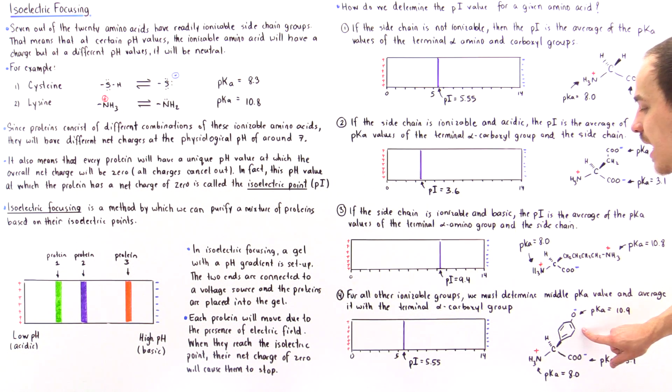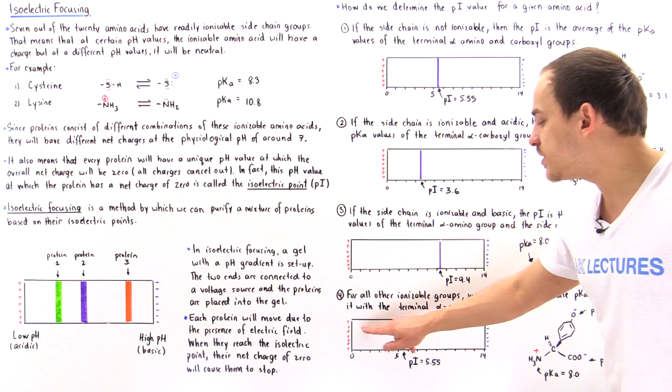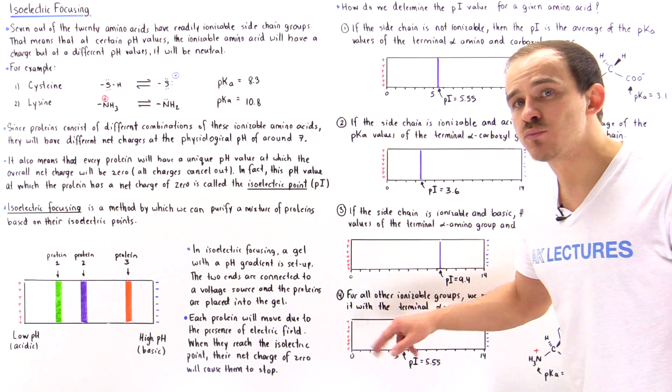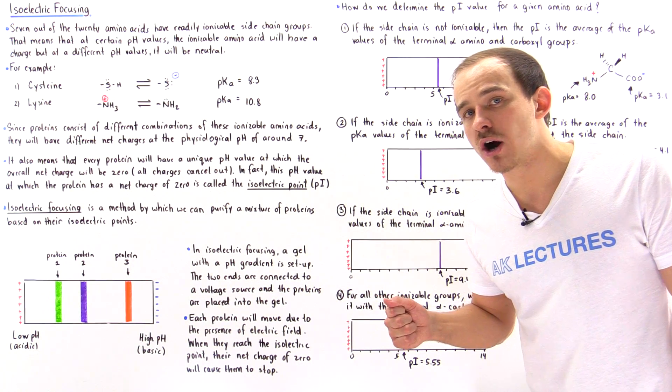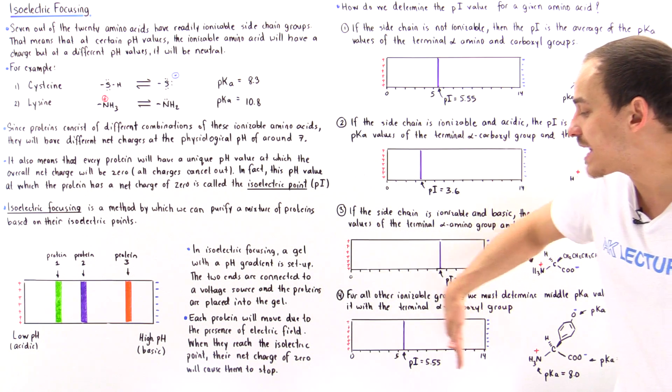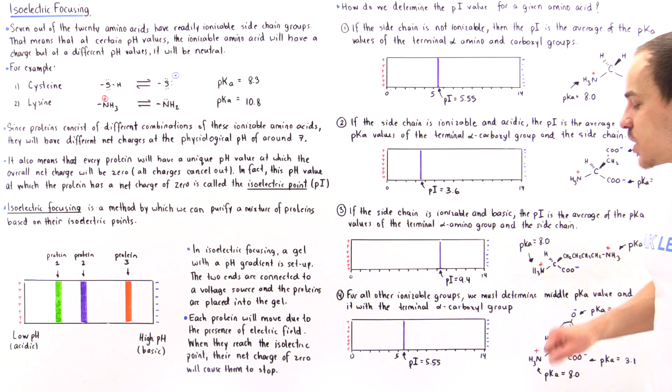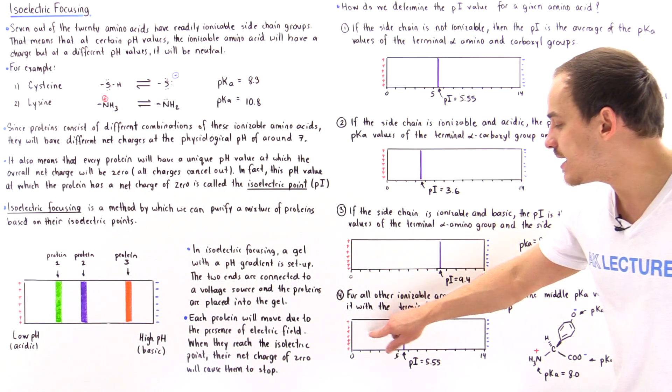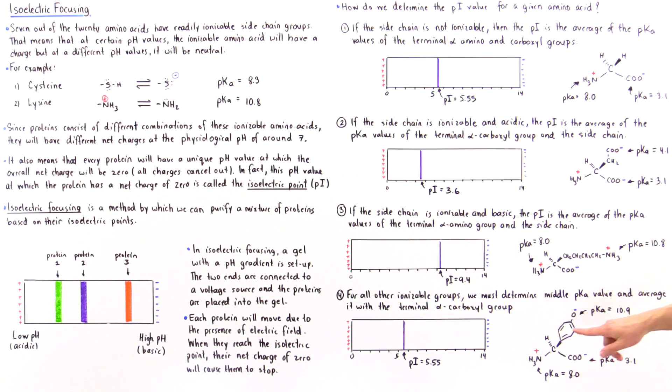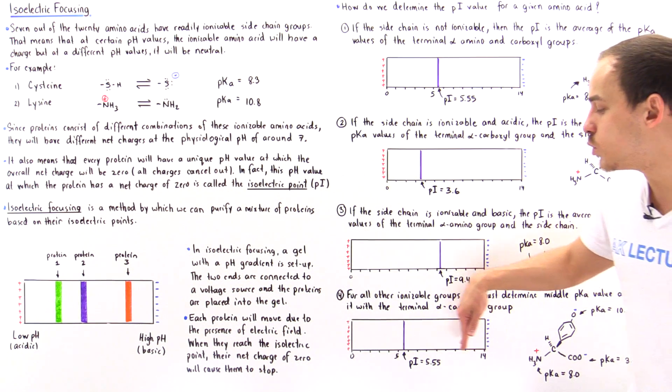And likewise, if we take this same tyrosine and place it within this region, it will have a net negative charge. As a result of that electric field, it will gravitate and move towards this pI line. So if we place this here it will move this way; if we place this here it will move in the other direction.